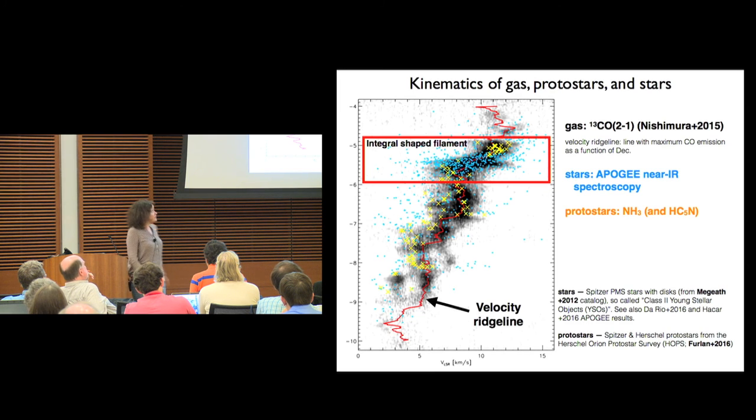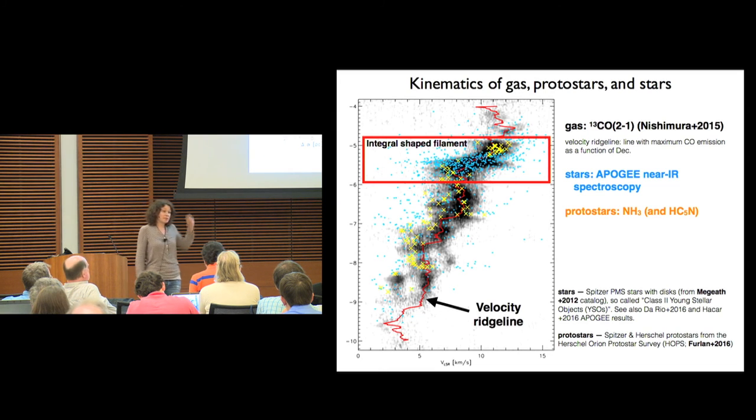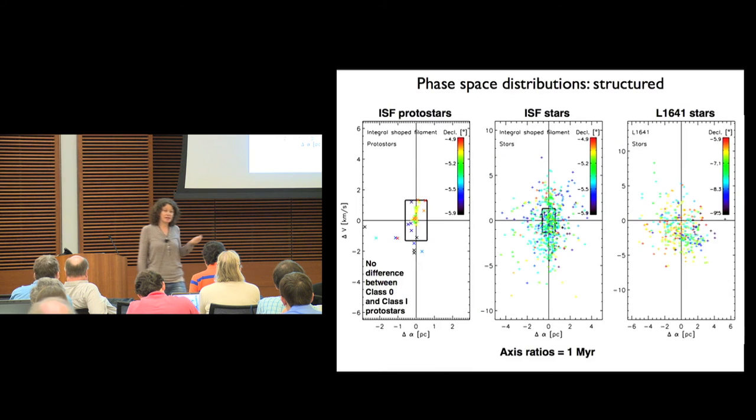The protostars are on the filament, they're yellow points, and the stars are blue, and they're more spread out. The grayscale in the back is the 13CO map. So this is a position velocity diagram. We see exactly what I just described. When I say stars, I mean Spitzer characterized disk sources, so young stars.